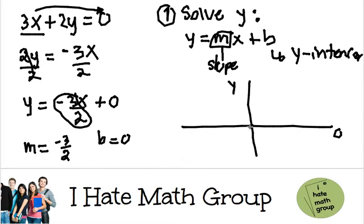Because it's negative, I go down 1, 2, 3, and then the 2 is going to be a run to the right, 1, 2.